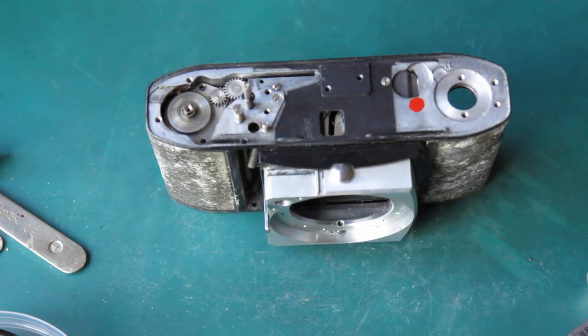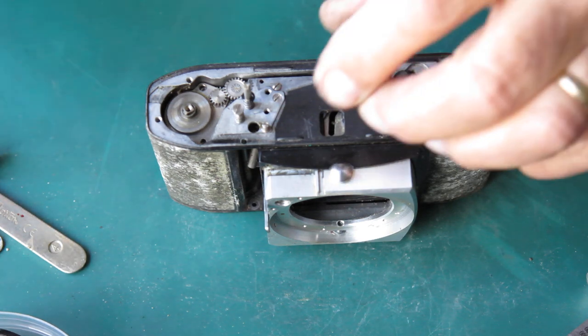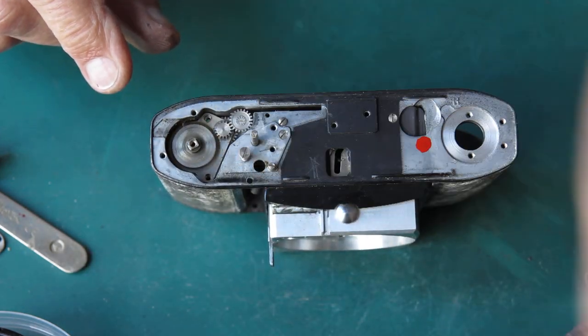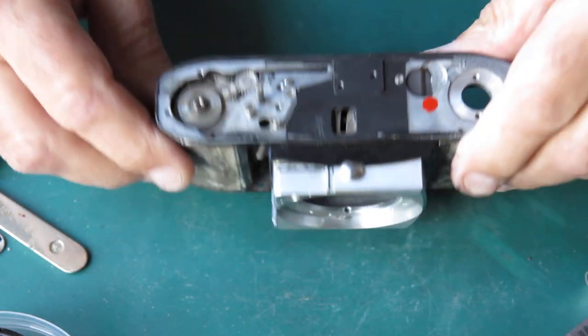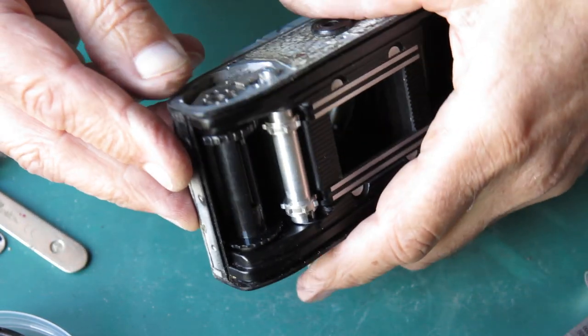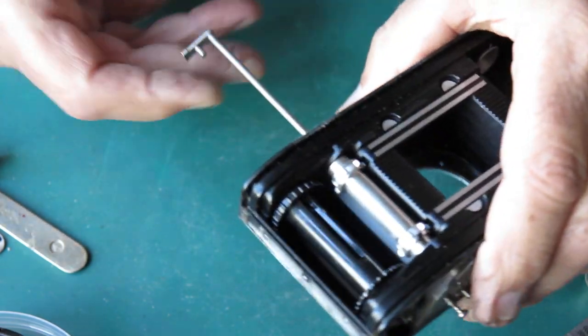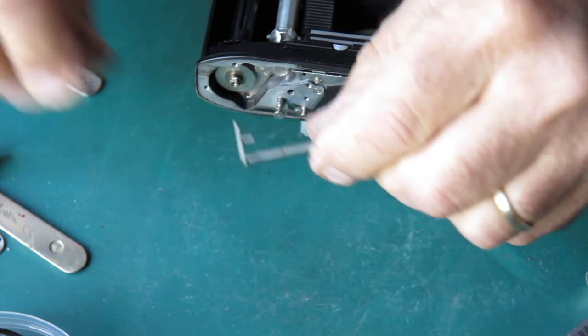Get this film advance taken apart while we're here. So I'm going to remove this circlet and the spring. This is the lock lever, and that's reluctant to come out of the hole, so it's probably got a spot of corrosion.